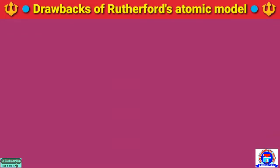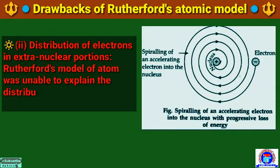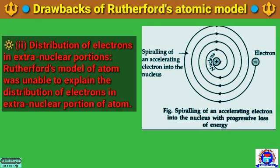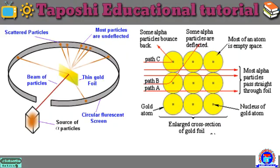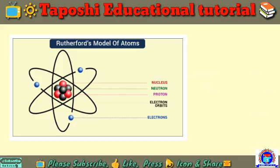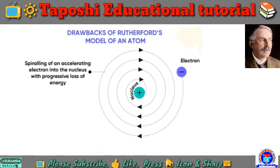Number 2: the distribution of electrons in the extra-nuclear portion. Rutherford's model of the atom was unable to explain the distribution of electrons in the extra-nuclear portion of the atom. I hope students, you understood the Rutherford alpha particle scattering experiment, the atomic model, and the drawbacks of Rutherford's atomic model. In the next part, we will bring the Bohr atomic model.